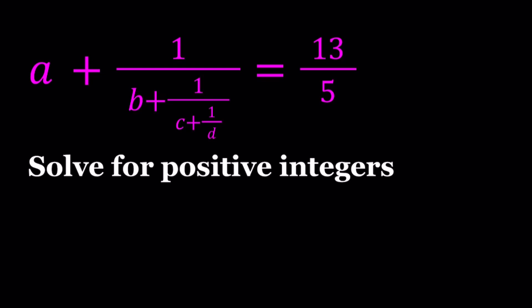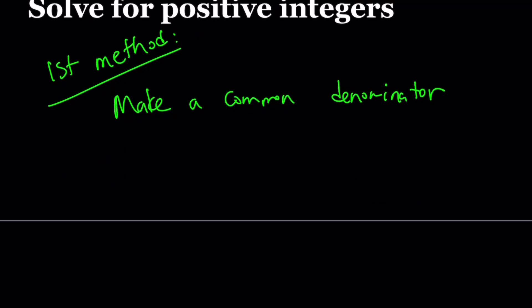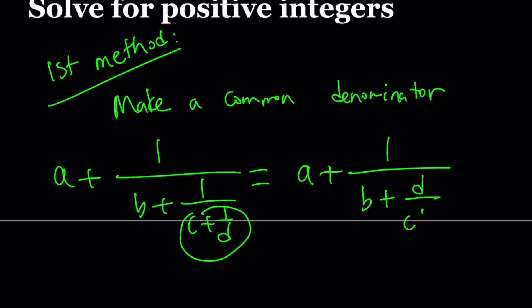First method. Even though I'm not going to completely solve it with the first method, I just want to show you an approach to the problem. This involves making a common denominator. The reason I show you this is because sometimes you do things that you shouldn't be doing, and they are very painful. So I'm going to start with the original expression and make a common denominator starting at the bottom.